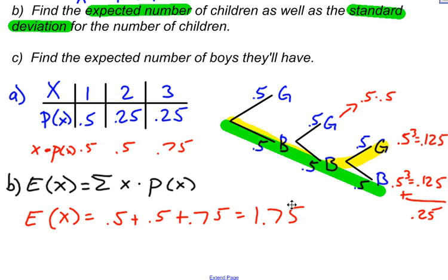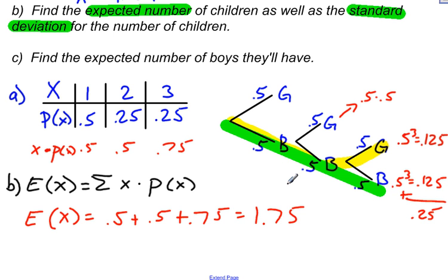Remember, expected value is a mean, and it's okay for a mean to be a decimal. We know we can't have 0.75 of a child, but we're talking about the average number of children when looking at this probability distribution.